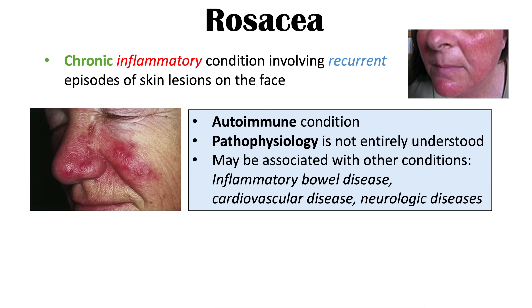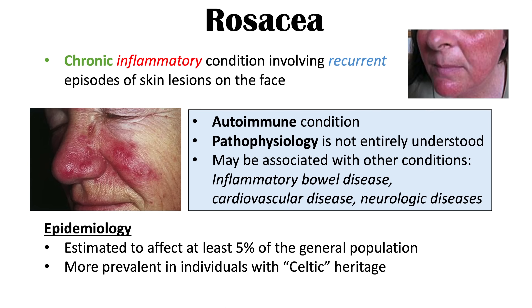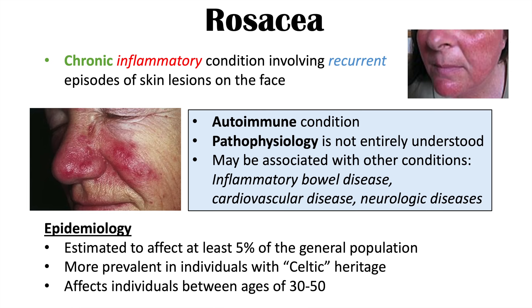Rosacea may be associated with other conditions, including inflammatory bowel disease like ulcerative colitis and Crohn's disease, and cardiovascular diseases and neurologic diseases. Rosacea is estimated to affect at least 5% of the general population, making it a relatively common condition. It is more likely to affect those with Celtic heritage, and it most commonly affects individuals between the ages of 30 to 50.